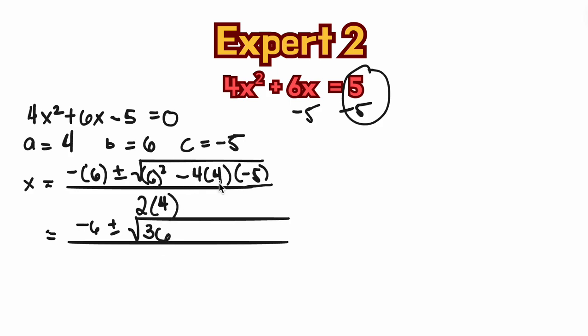Also, we have negative 4 times 4, that is 16, times negative 5. Negative 16 times negative 5 is positive 80.